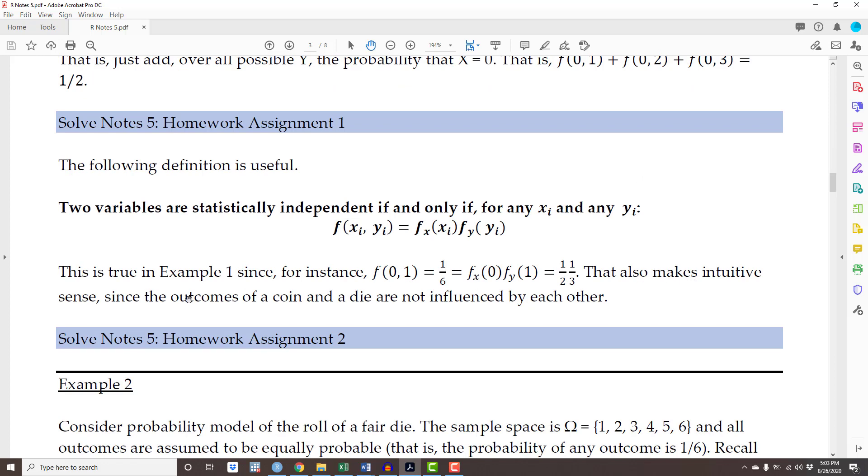Note that that makes intuitive sense. Think about it - the outcome of a coin and a die are not influenced by each other. So intuitively you know that these events are independent. How would the outcome of a coin somehow affect the outcome of a die? Those results are not related.